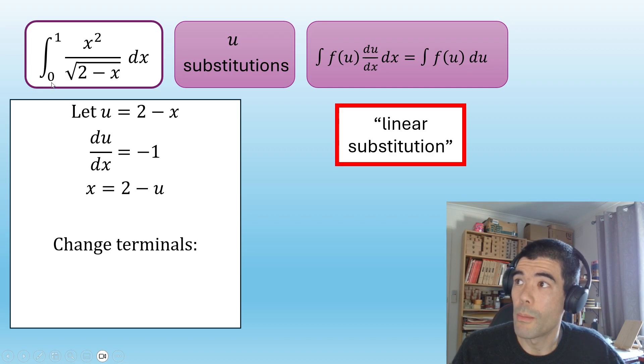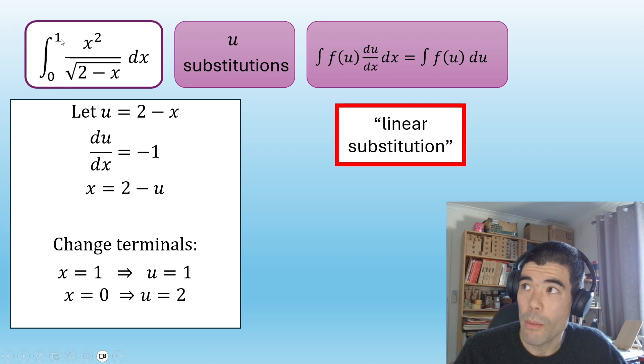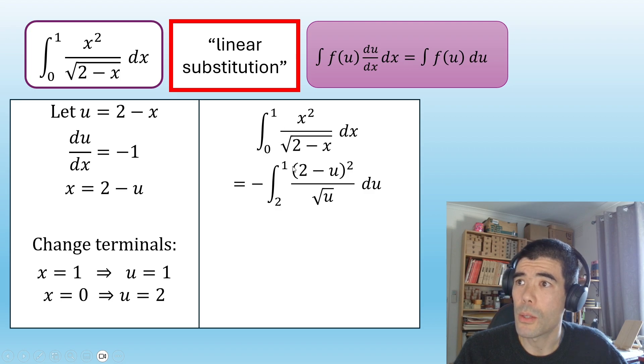This is a definite integral with terminals 0 and 1. We also want to change those out from x values to u values. Now if x is 1, u is going to be 2 minus 1. Well that's still 1. But when x is 0, u is going to be 2. So by changing the terminals, then we can express the whole integral in terms of u. So it's going to look like this. 1 goes to 1, 0 goes to 2. x squared becomes 2 minus u all squared. And on the bottom there, square root u du. Now the negative sign came because du dx is negative 1. We need to introduce that negative there. Sometimes people write like dx is equal to negative du and think of it as a substitution. So that's fine.